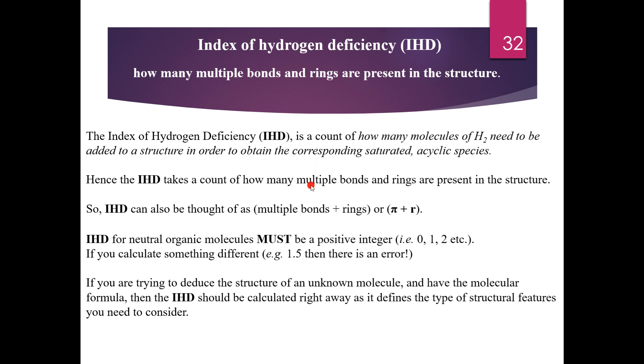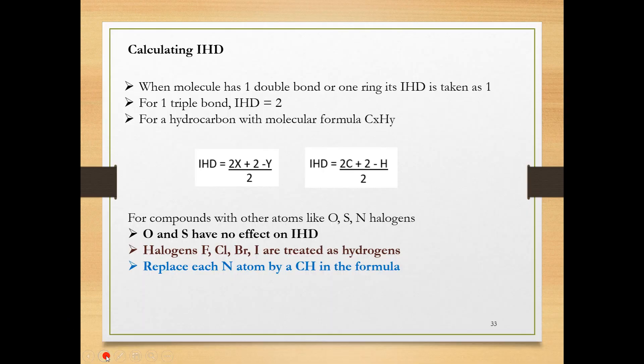IHD takes a count of how many multiple bonds and rings are present in the structure. IHD can also be thought of as multiple bonds plus rings present. For neutral organic molecules, IHD must be a positive integer. If you calculate something different, like 1.5, there is an error. Using this IHD, we can deduce the structure of a particular molecule. Before assigning a structure, we always have to find out the IHD.